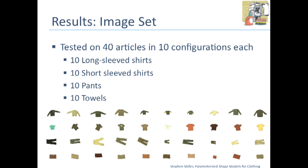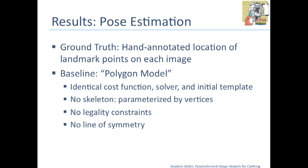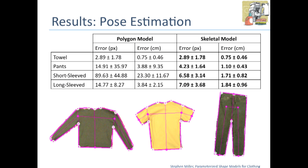For pose estimation, we wanted to provide some ground truth, so we hand-annotated the location of each landmark point. We introduced a baseline using an identical cost function, solver, and initial template, but with no interior structure, no legality constraints, and no line of symmetry — this is the analog of a purely shape-based fitting, just fitting an n-sided polygon to the article of clothing. With the exception of a towel, which has no internal structure, we tend to do at least twice as good as the polygonal approach, getting errors on the order of one to two centimeters.